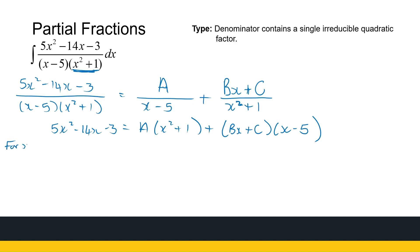I'm going to look at when x is equal to 5. My left-hand side — you might need a calculator — 5 times 25 minus 14 times 5 minus 3 gives you 52. On the right-hand side, the second term becomes 0 and my first term becomes 26A. So I can find that A equals 2.